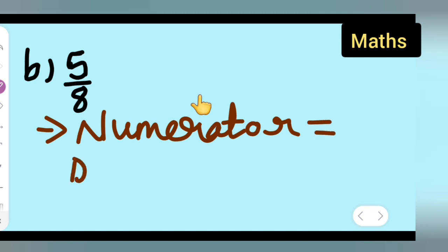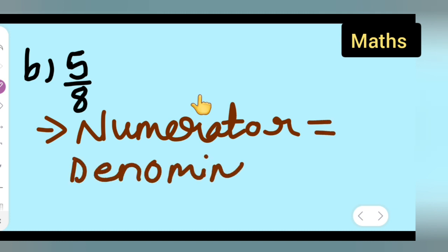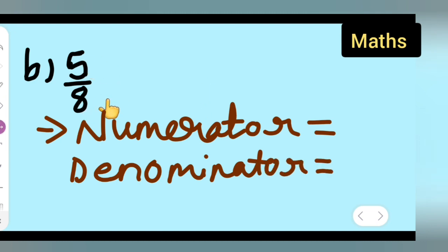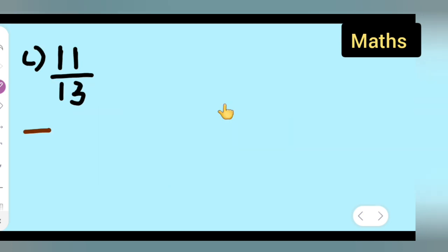For the second fraction, 5 upon 8, write down the numerator and the denominator. Here your numerator is 5 and denominator is 8.